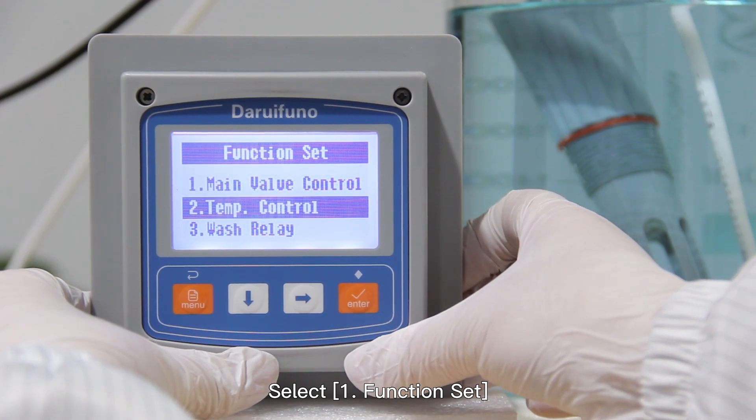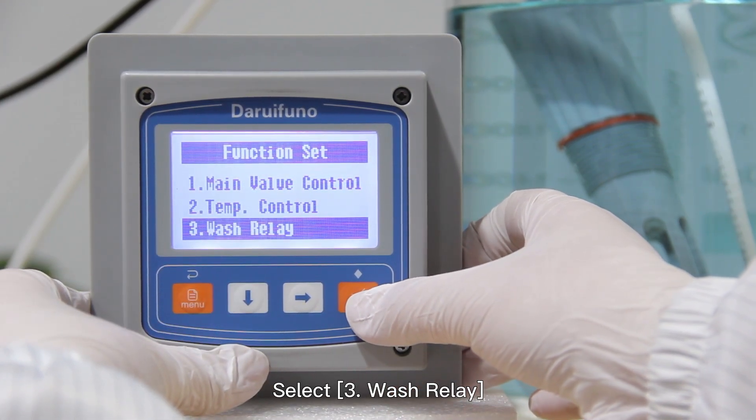Select 1, Function set, then select 3, Wash relay.